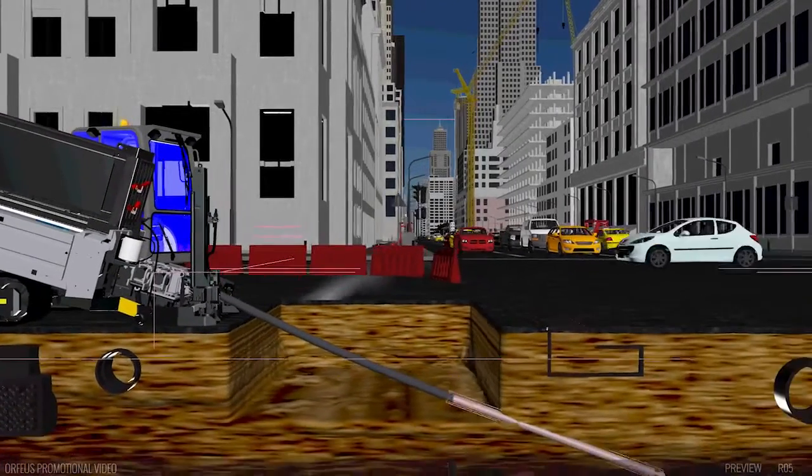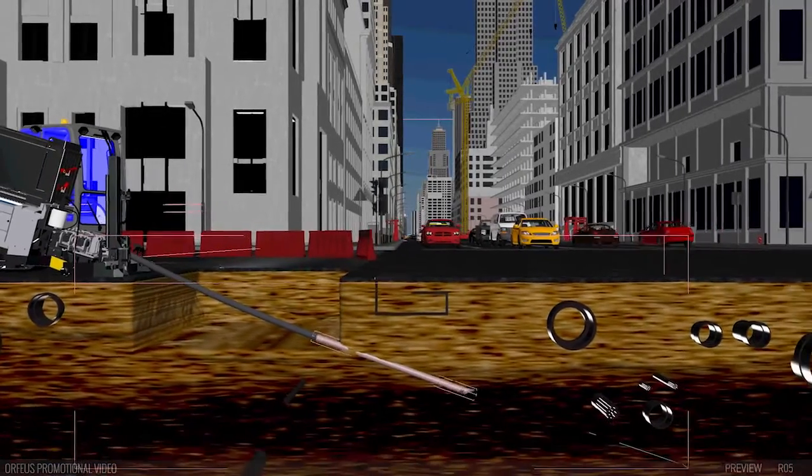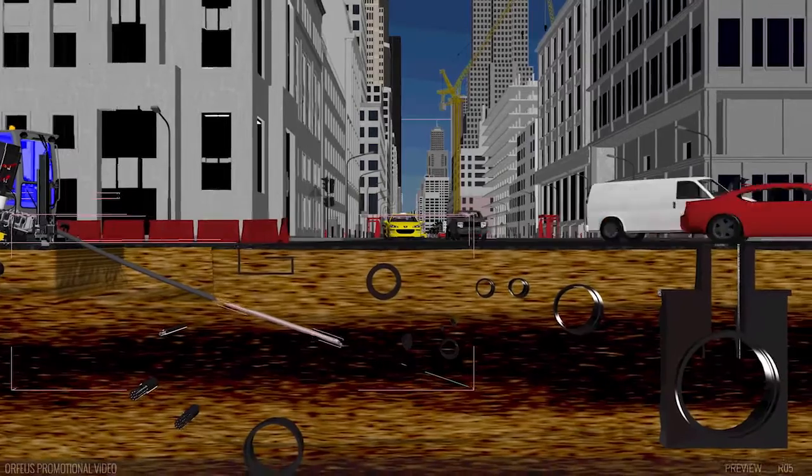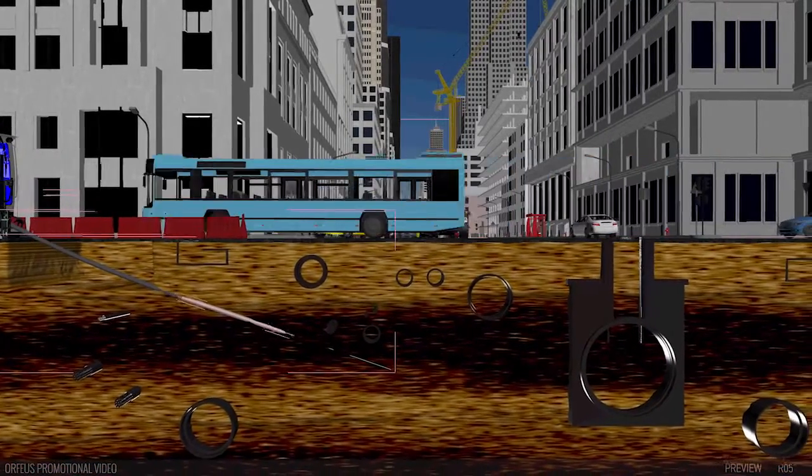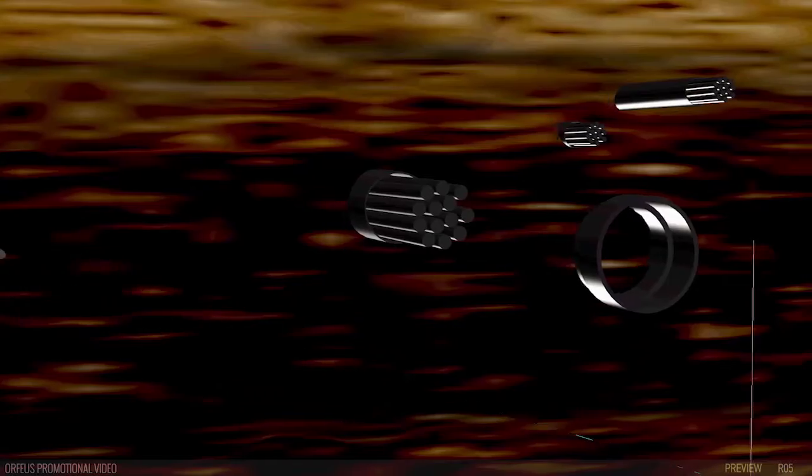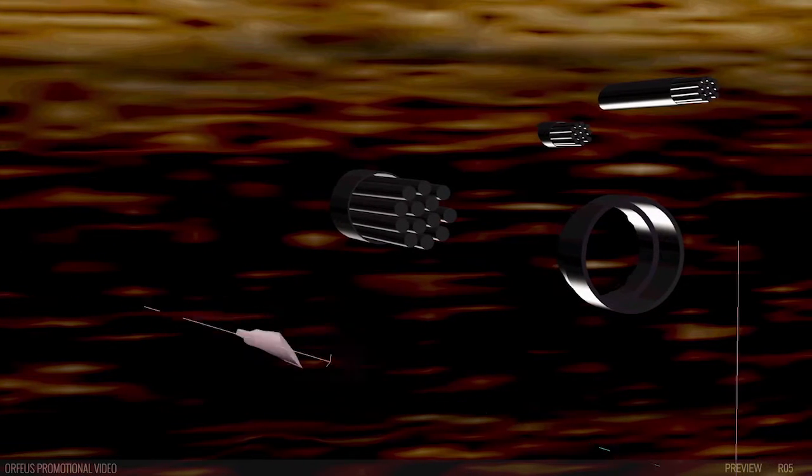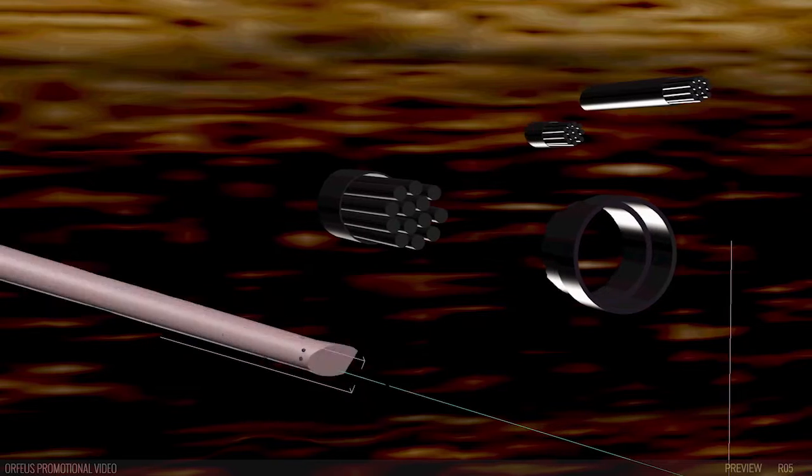As drilling procedure continues, the radar data is transmitted in real-time along the drill string to the surface. Depending on soil conditions, Orpheus HDD radar technology can detect metallic or non-metallic obstacles at ranges of up to 50 cm in front of and around the borehead.